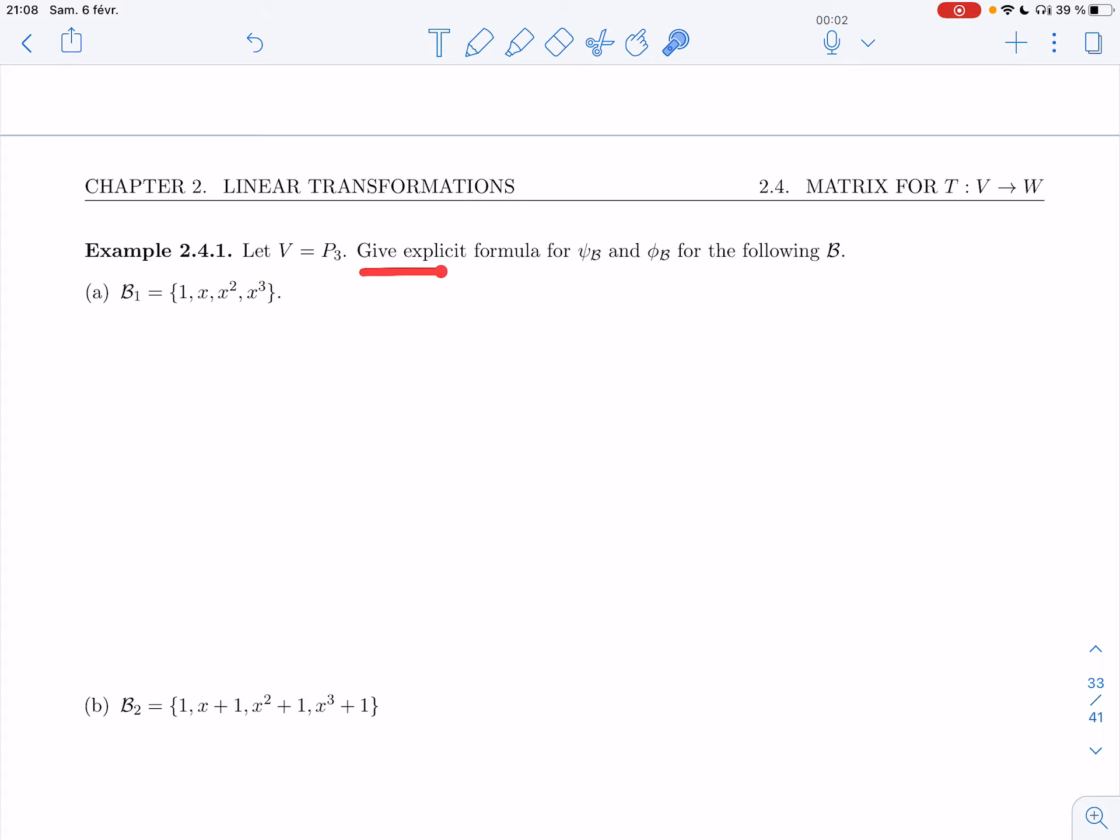I want to give an explicit formula for φ_B, the coordinate map, and ψ_B, the linear combination map, for the following basis. So they do depend on a choice of basis. Let's start with the standard basis.